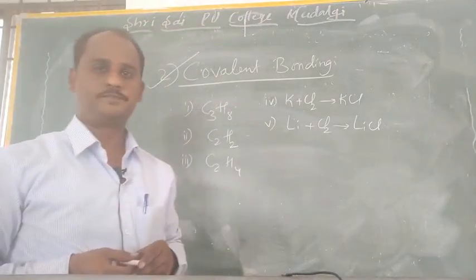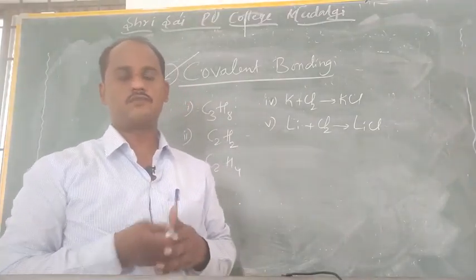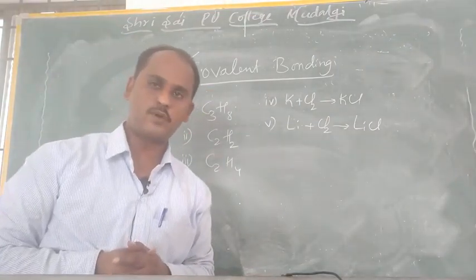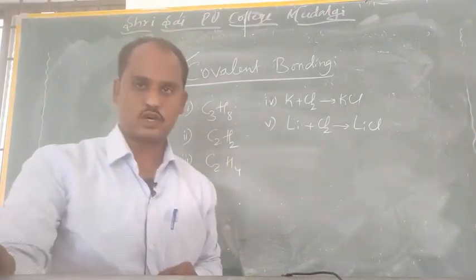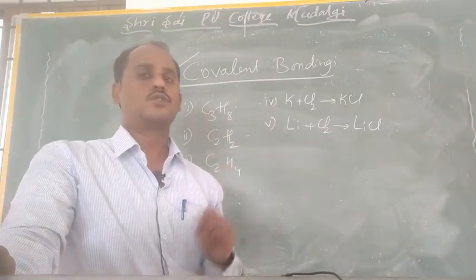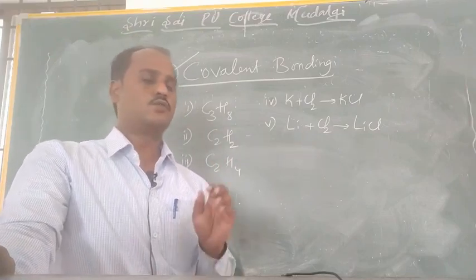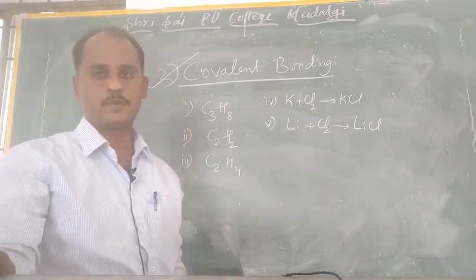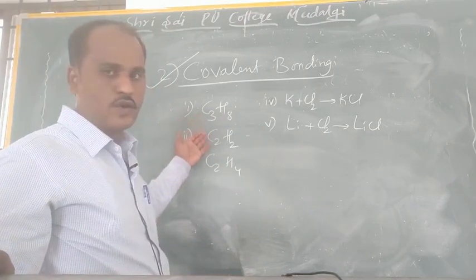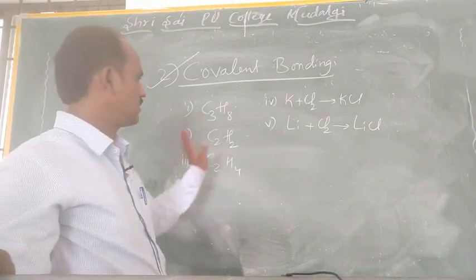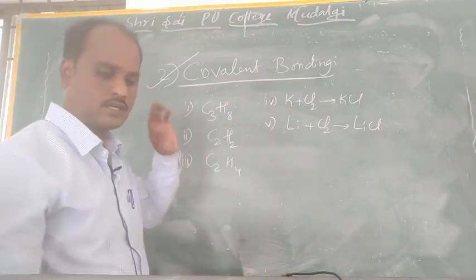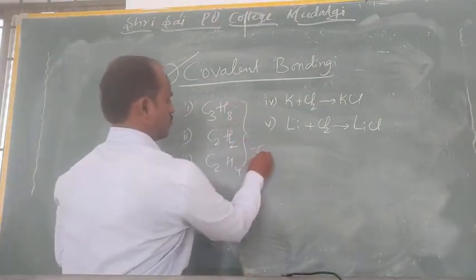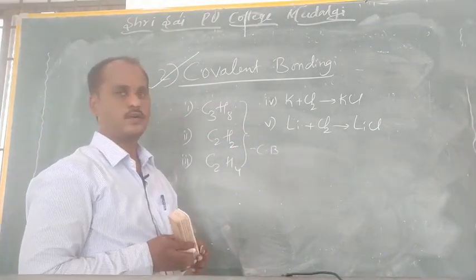Hello, good morning my dear students. Last class we discussed regarding covalent bonding — the bond which is formed by sharing of electrons. Most of the carbon-rich compounds exhibit covalent bonding. You have to identify which of these exhibits covalent bonding as well as ionic bonding. C₃H₈, C₂H₂, and C₂H₄ all three exhibit covalent bonding.